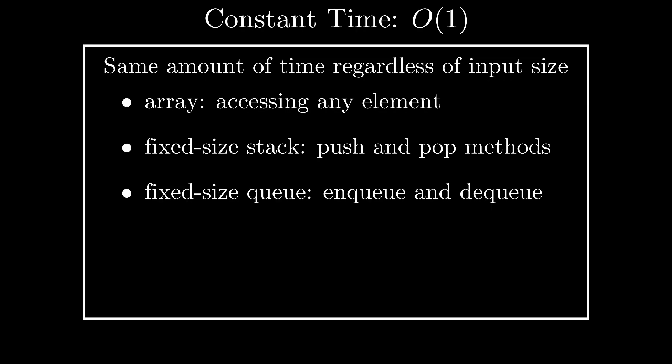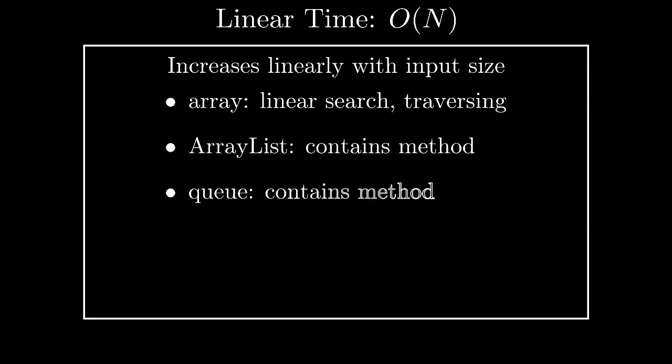The next very common time complexity that we've already taken a quick look at is linear time. So if you're aware, linear time increases linearly with input size. These are programs whose running times increases linearly with input size. Examples include linear searching an array, traversing an array, using the contains method for an arraylist, and using the contains method for a queue. All of these are linear time, still very quick operations, but they will increase in time as your input size increases. Of course, as long as your input size isn't gigantic, this will all be done in a matter of seconds.